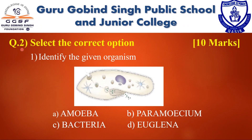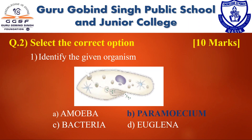Now question 2 — select the correct option. The first question is: identify the given organism. In the picture, I have shown a unicellular microorganism, and the name of this unicellular living organism is Paramecium.